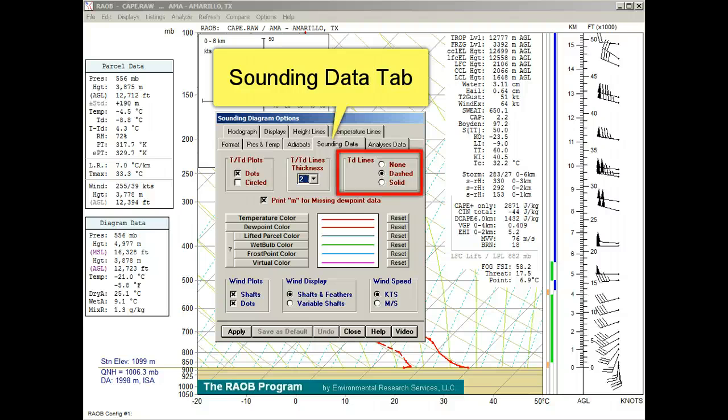You can even turn off the dew point profile, or draw it with a dashed line, or a solid line. With this option, RAOB will print the small letter M for missing dew point values.